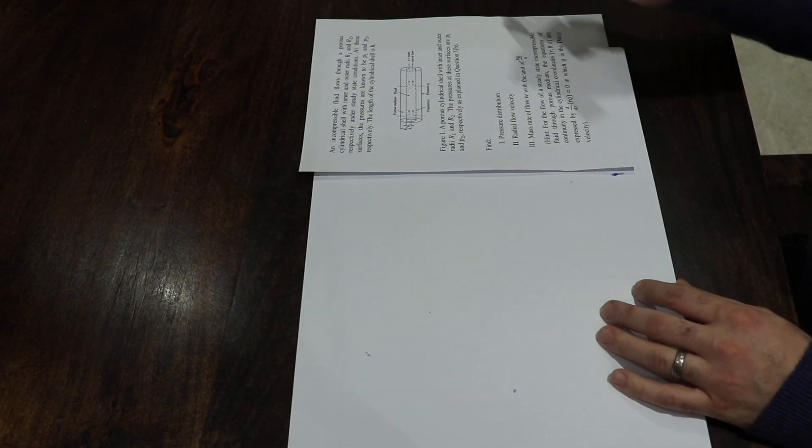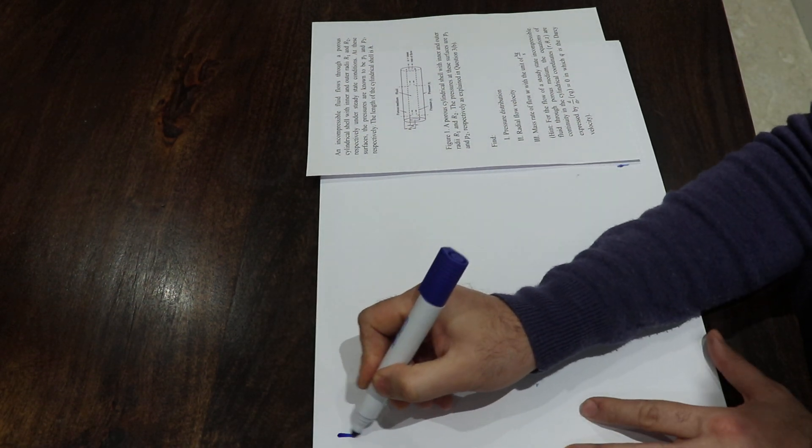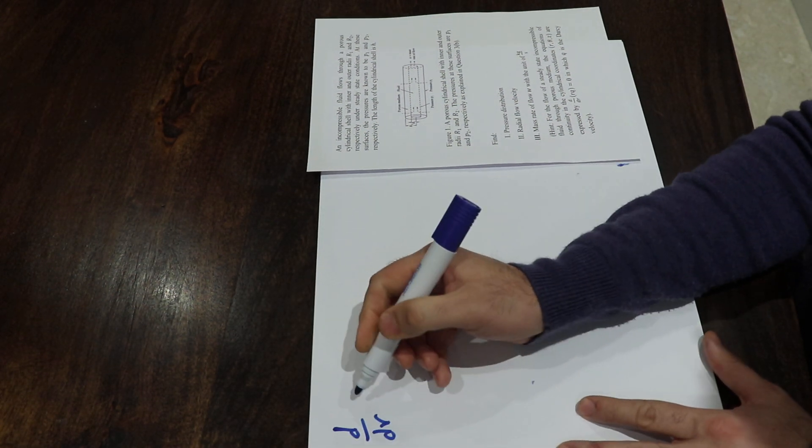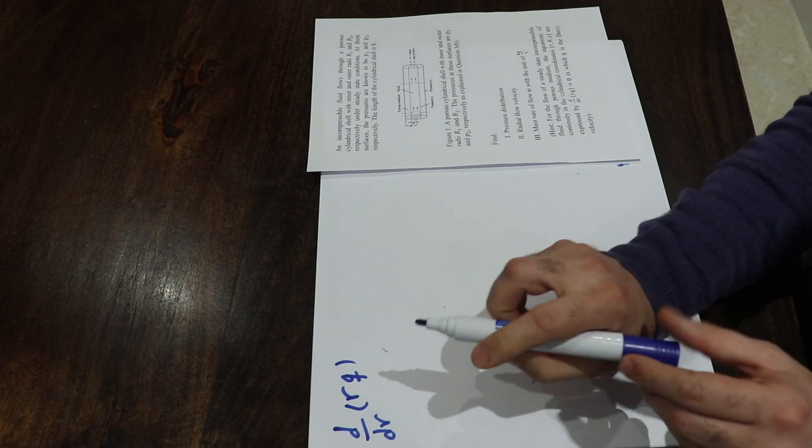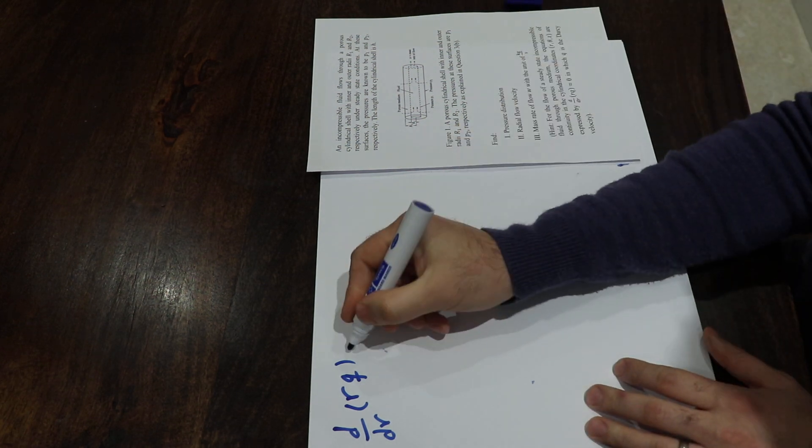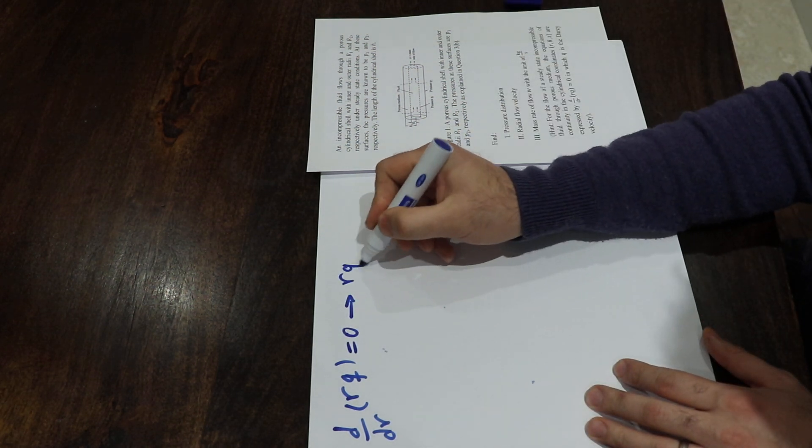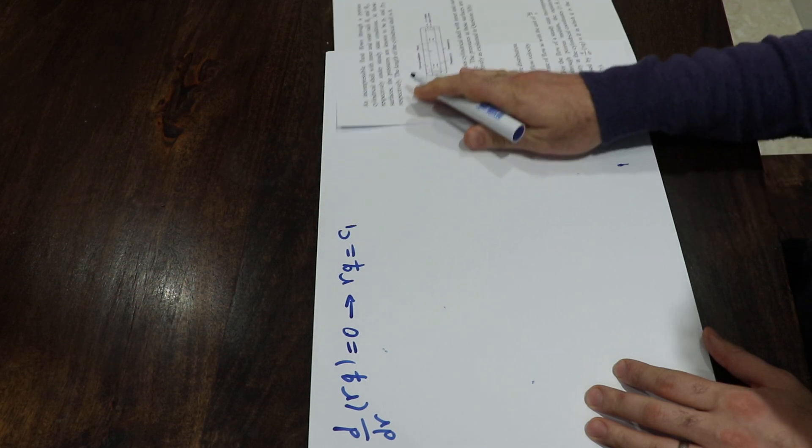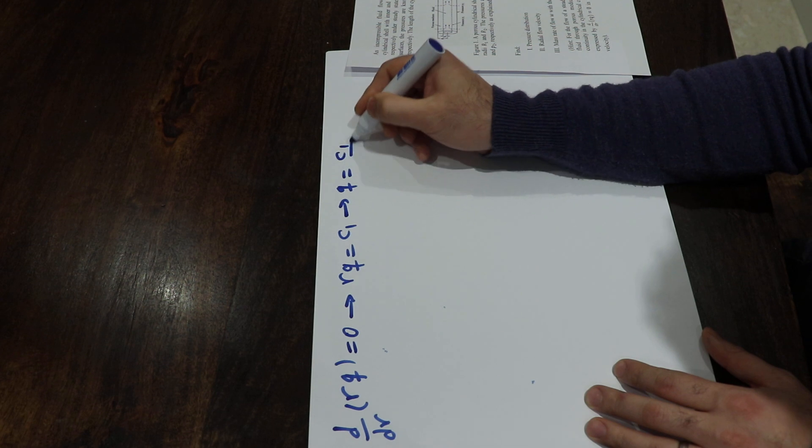This is an important hint because you can start the solution using this: d/dR times RQ, or in other words the derivative of RQ with respect to R, is equal to zero. Therefore, if you take the integral, you can write RQ is equal to a constant, therefore Q is equal to C1 over R.